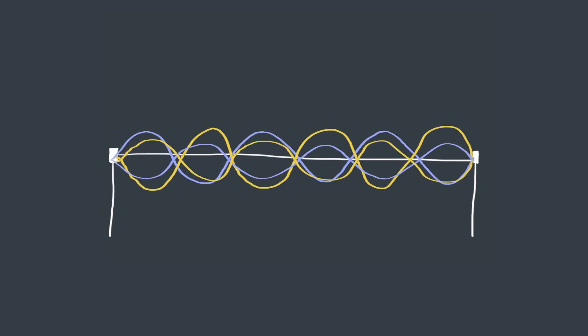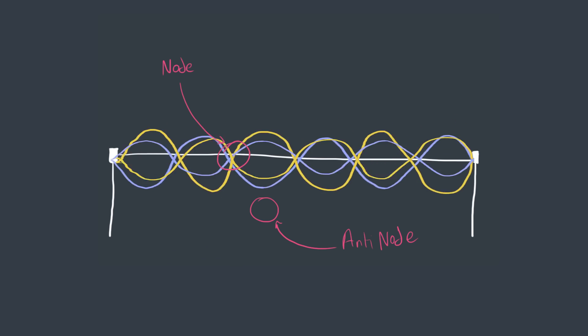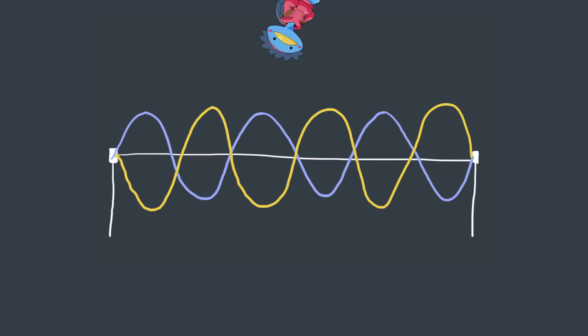This creates something called a standing wave, where some parts of the string will vibrate a lot while others will stay completely still. Now imagine a grain of sand would manage to land on the string, on the part where the vibration is at its peak, called an anti-node. The grain of sand would bounce around back and forth until it settles at a still point, called a node.